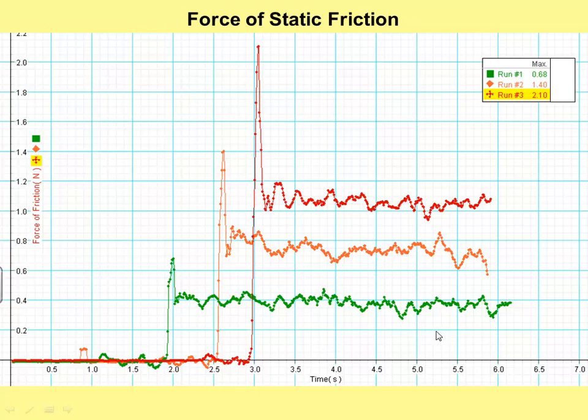Now if you remember our discussion of why the graphs looked this way, this stuff over here where it's all zero, that's before it actually started pulling. The horizontal part here is when it was moving and moving constantly. So this was the kinetic friction. And you can see here, notice the orange line is about twice the green one, and the red one is about three times the green one. So they were nice and proportional.